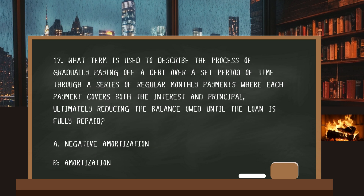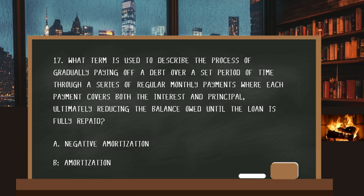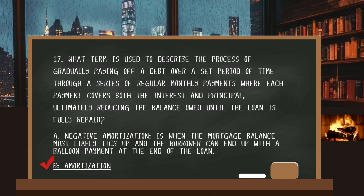Number seventeen. What term is used to describe the process of gradually paying off a debt over a set period of time through a series of regular monthly payments, where each payment covers both the interest and the principal, ultimately reducing the balance owed until the loan is fully repaid? The answer: amortization. Negative amortization is when the mortgage balance ticks up and the borrower can end up with a balloon payment at the end of the loan.